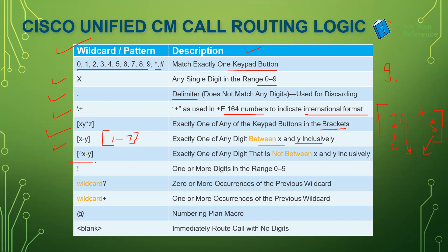Then if we have the pattern [^X-Y], for example [^1-8], that means exactly one digit that is NOT between X and Y. So [^1-8] will only match nine, zero, hash, or star — it will not include one to eight. Then the exclamation wildcard means one or more digits in the range zero to nine, which we already discussed.